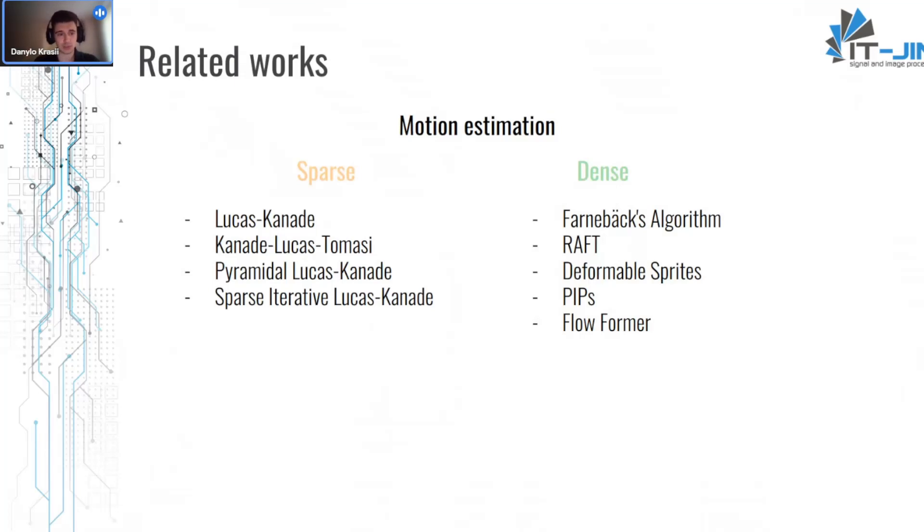Motion estimation is usually divided into two parts. Sparse optical flow is mostly estimated by Lucas-Kanade methods and its variations, and dense optical flow. There are a huge variety of methods from classic Farneback's algorithm to a lot of neural networks, even transformer-based FlowFormer from the last couple of years.